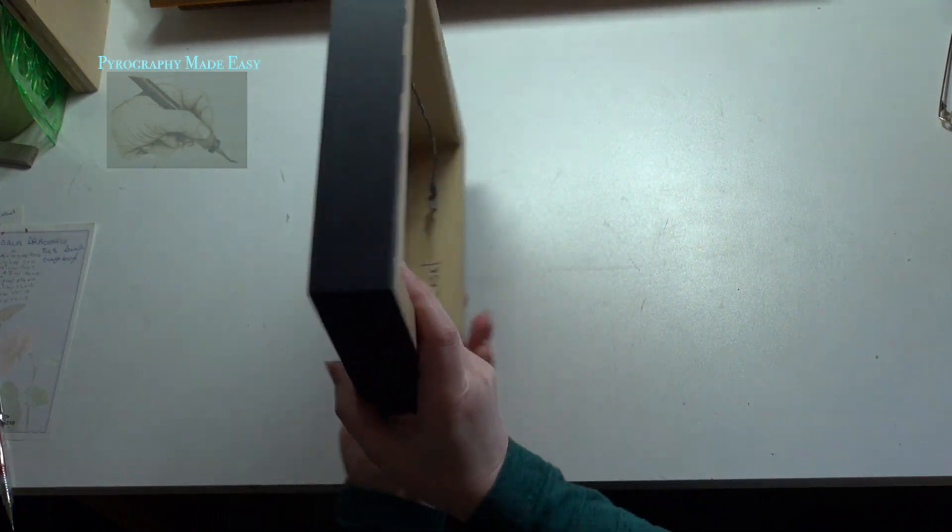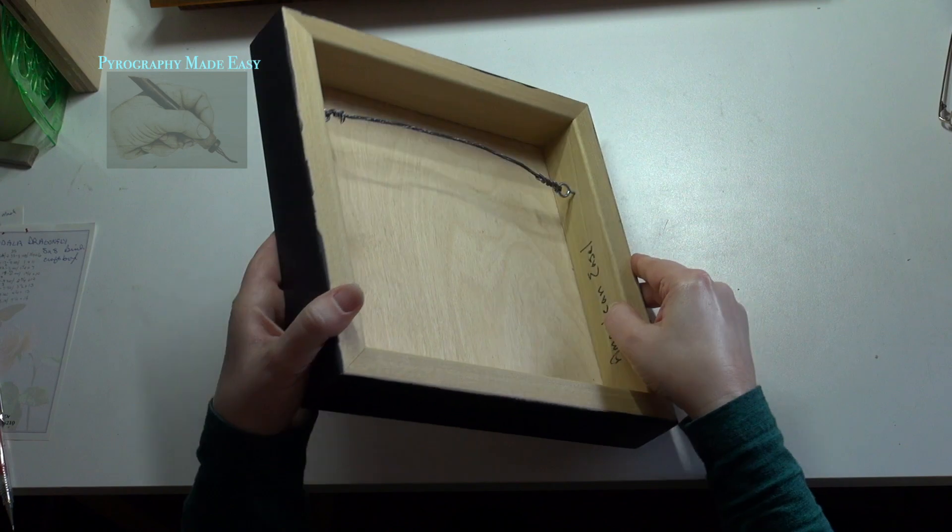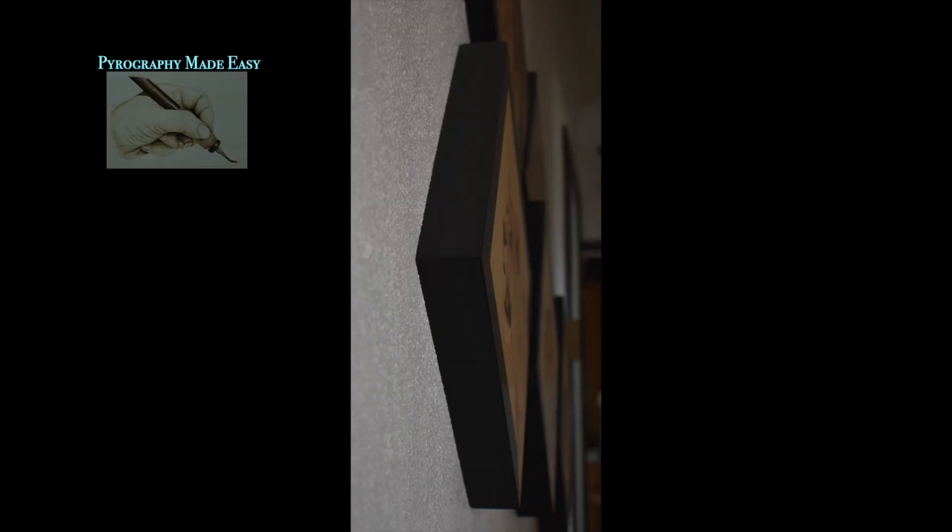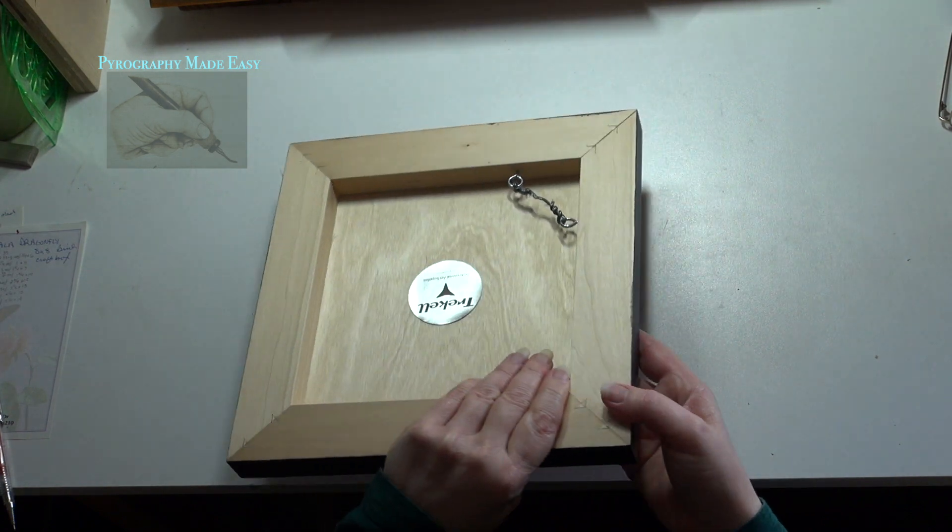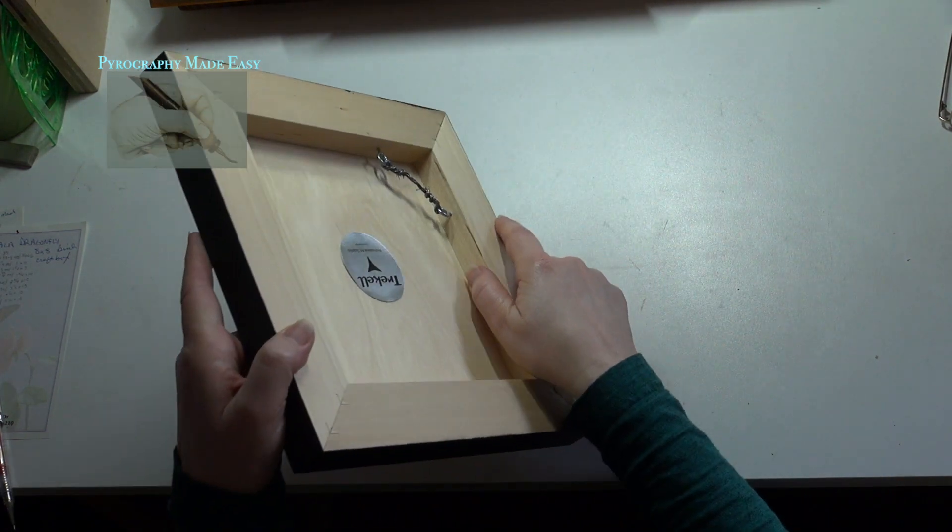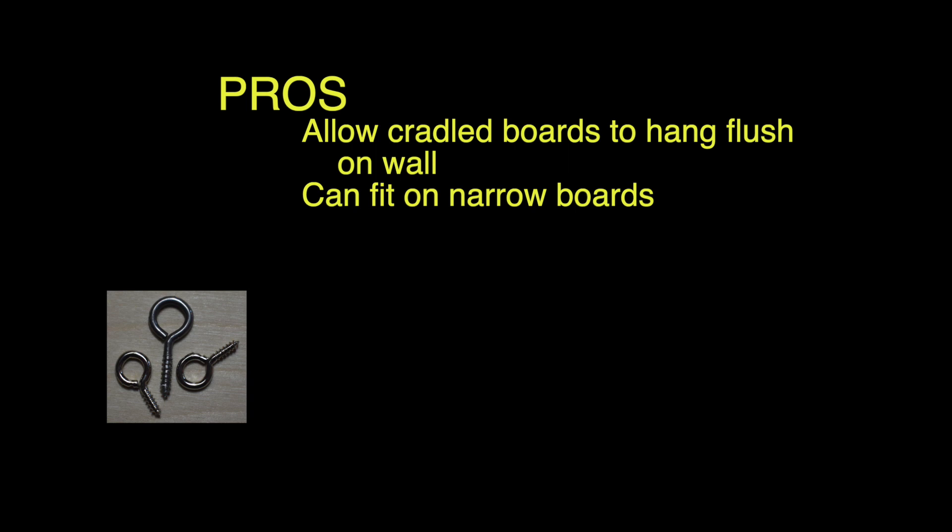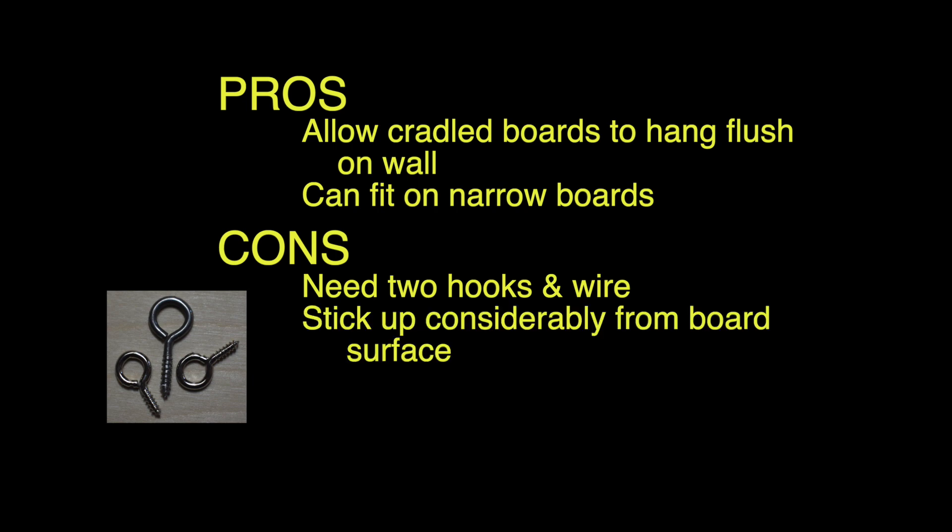I like to use eye hooks to hang artwork created on cradled boards. The reason is that it allows the artwork to hang flush on the wall. Another reason I like them is that the eye hooks will fit on narrow cradled boards. The pros: they allow cradled boards to hang flush on the wall, they can fit on narrow boards. The cons: you need two hooks and wire to use, they stick up considerably from the board's surface, they have limited applications.